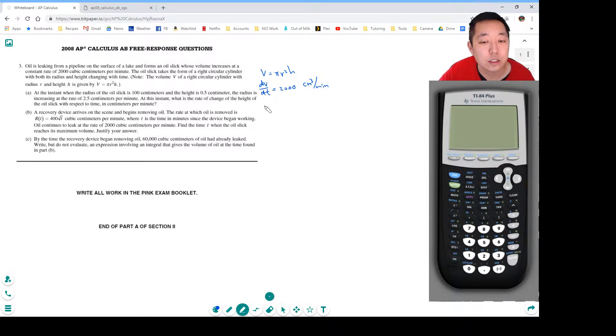At the instant the radius... so for Part A we're saying when the radius is 100 centimeters and H equals 0.5 centimeters, the radius is increasing at a rate, so dR/dt equals 2.5 centimeters per minute. At what rate is the height changing? They already gave you the equation, so I'm going to take the derivative of this equation with respect to time.